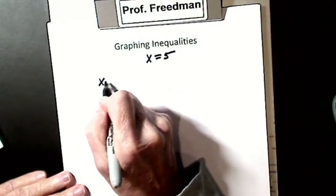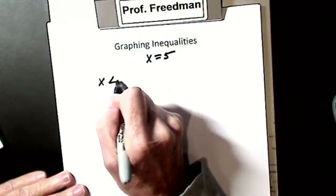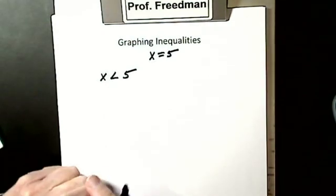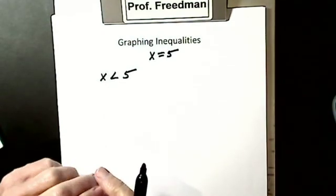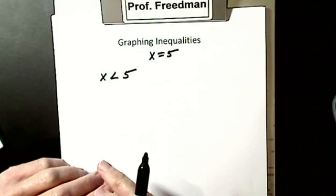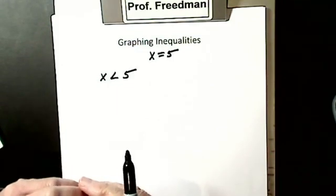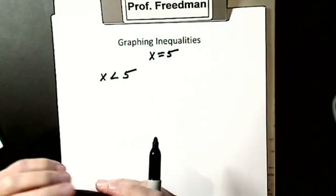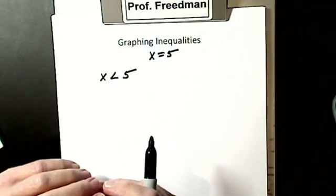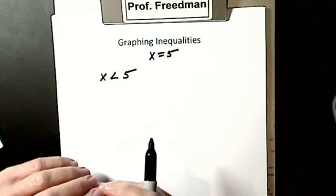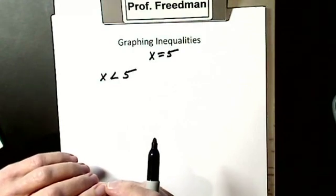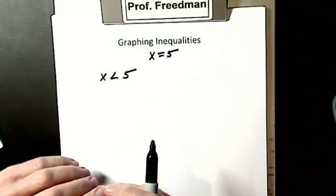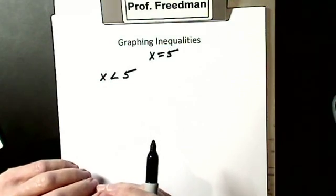Let's say I have x is less than 5. If I said to you, give me a number less than 5, you could say 1, 2, 3, negative 1, negative 4. I could have 1 and a half, 3 and 3 quarters, decimals like 2.5. They are all less than 5.